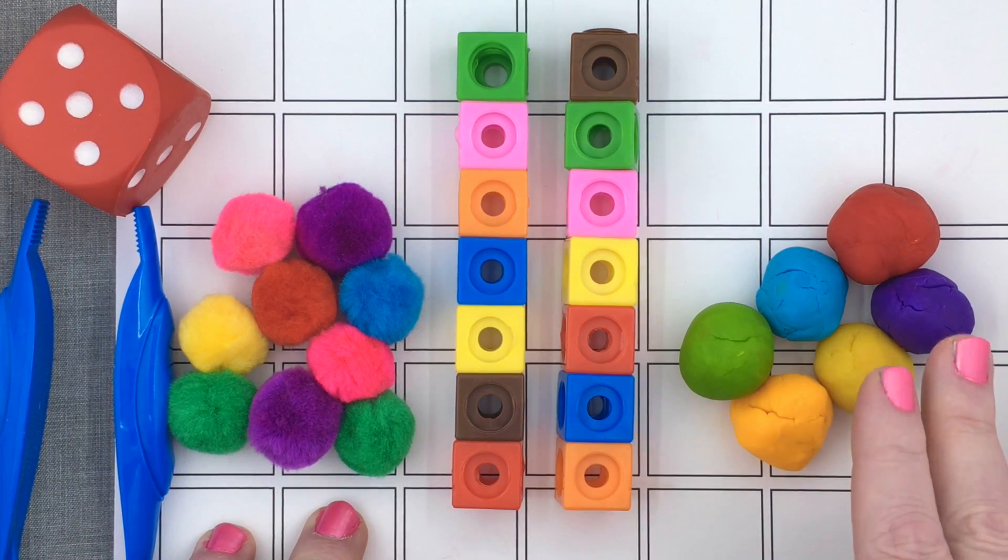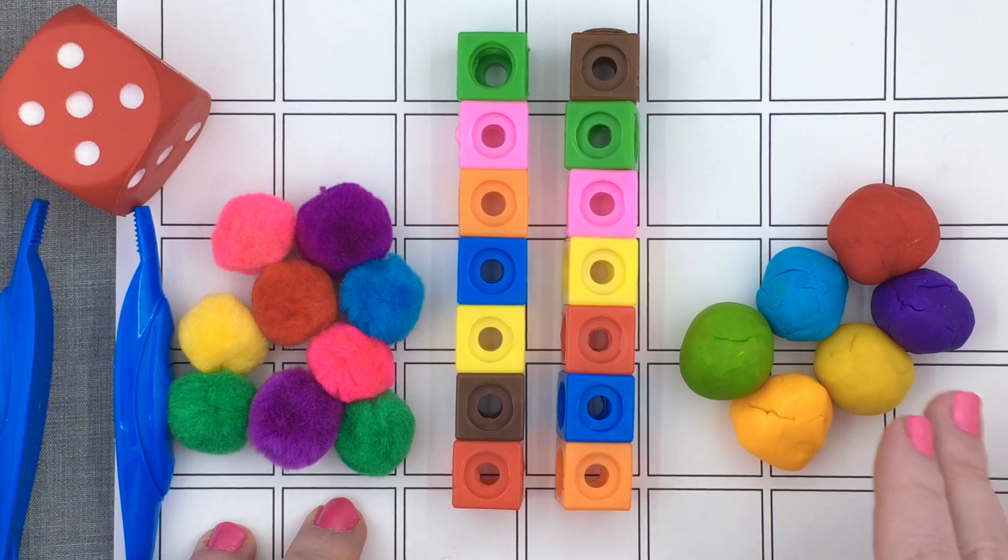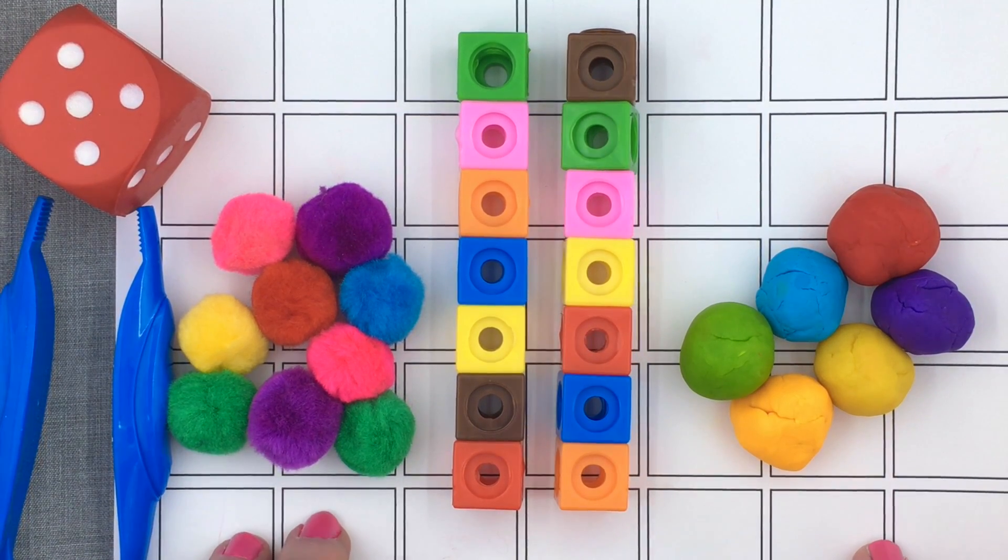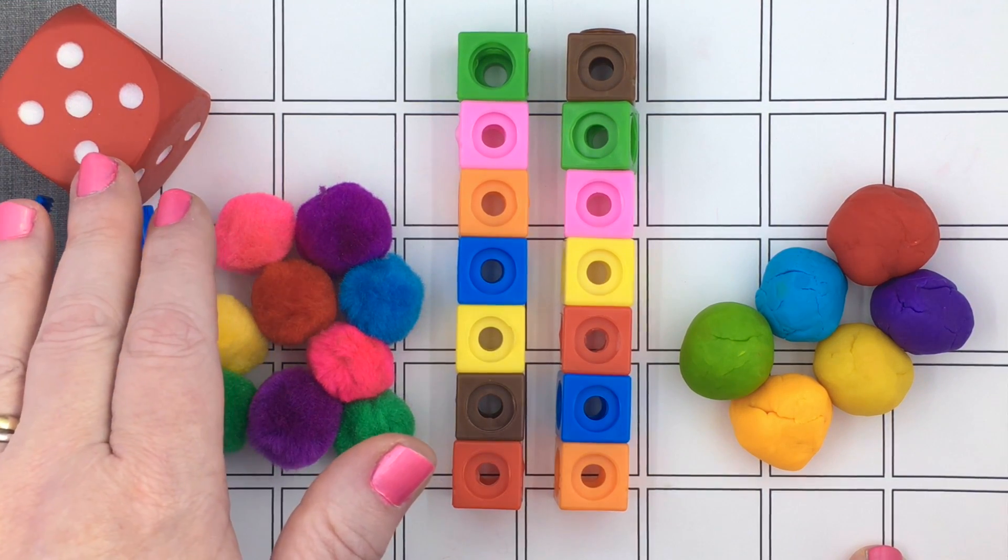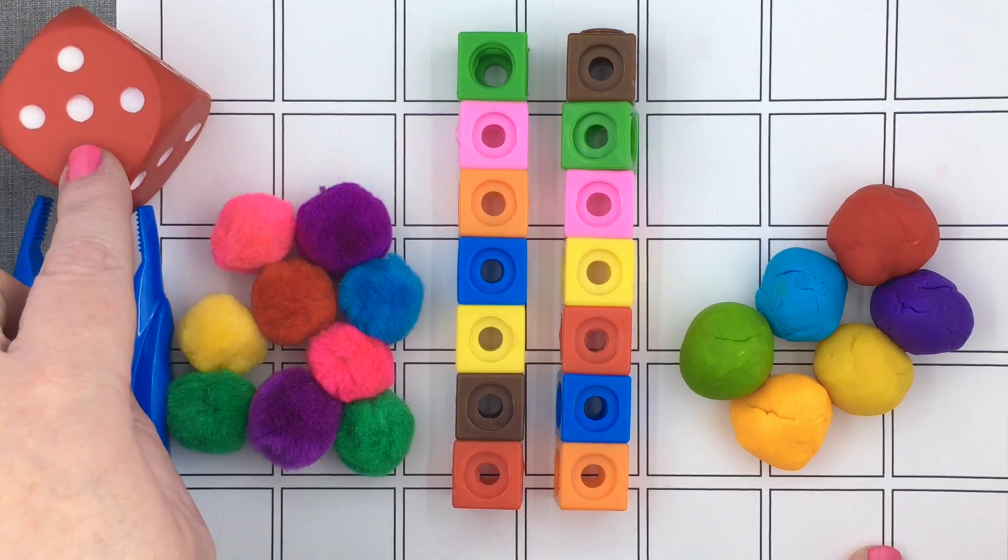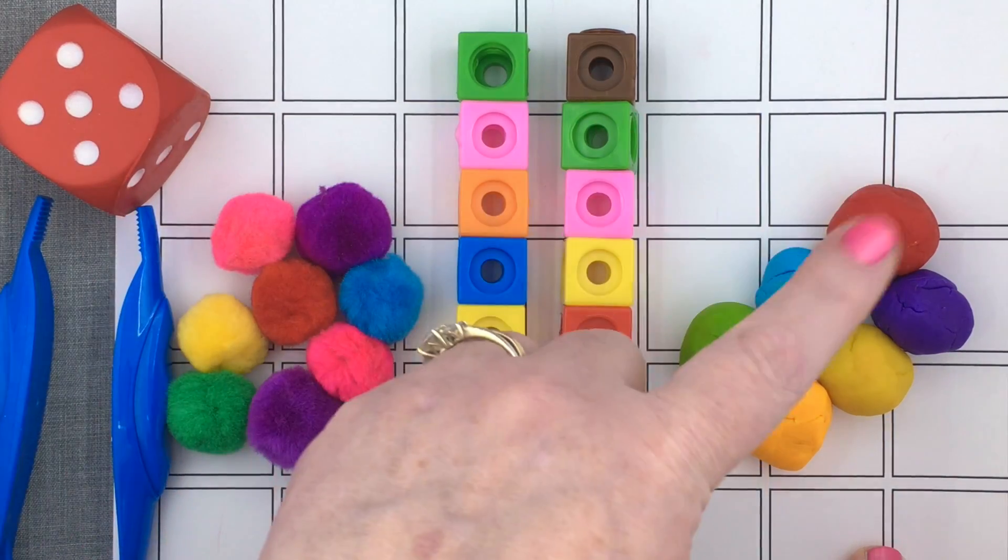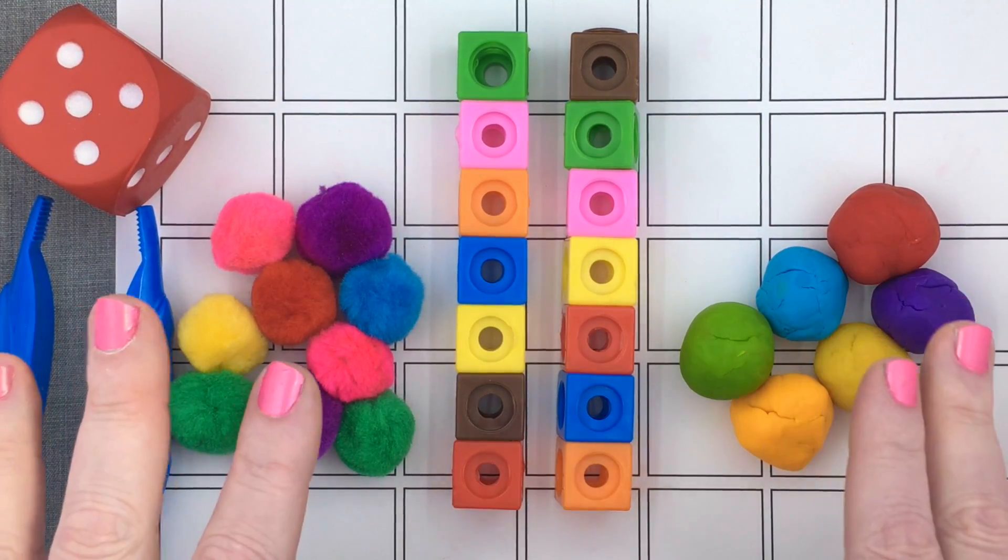You can use whatever you want as counters, and I'll share my top three picks that we like to use with this activity. To play this game, children simply roll the dice, and whatever number shows up, they put that many counters in the squares until the whole mat is filled up.